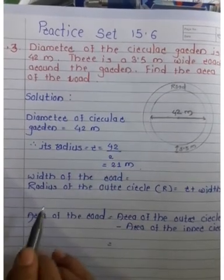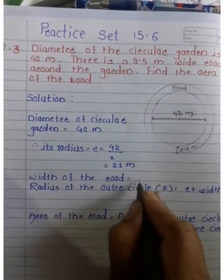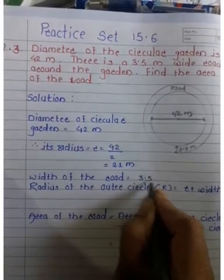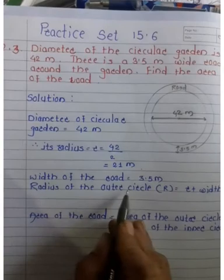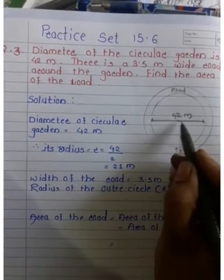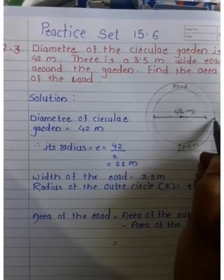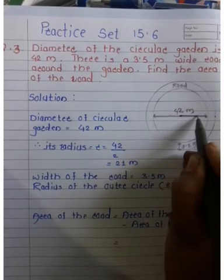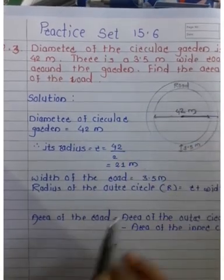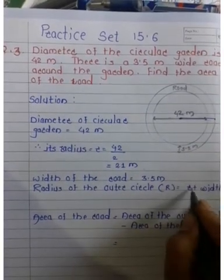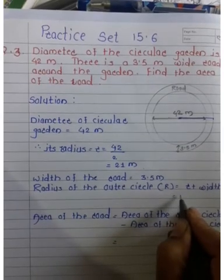Width of the road is 3.5 meters. The radius of the outer circle is r plus width, which equals 21 plus 3.5. When we add this, we get 24.5 meters.